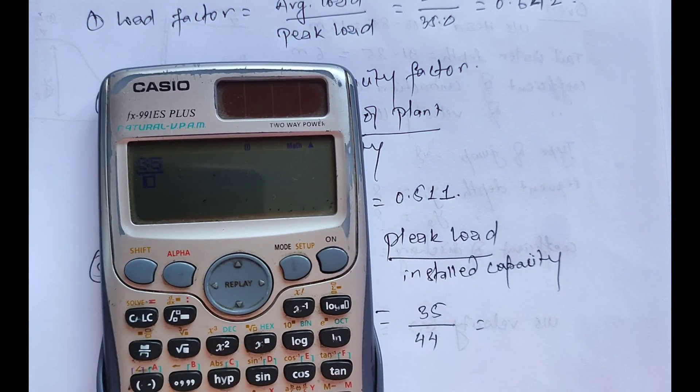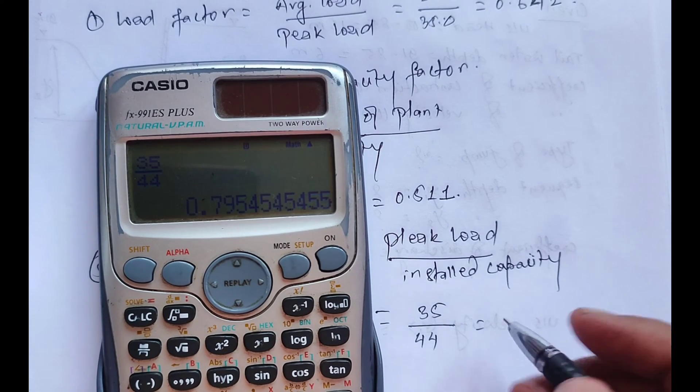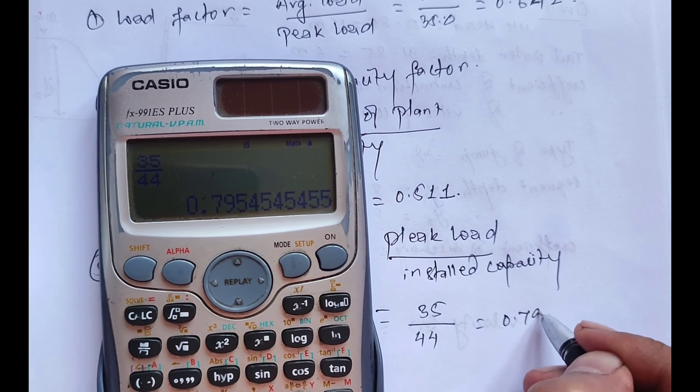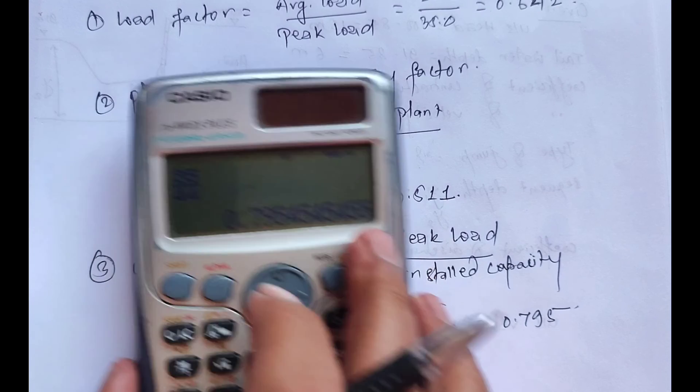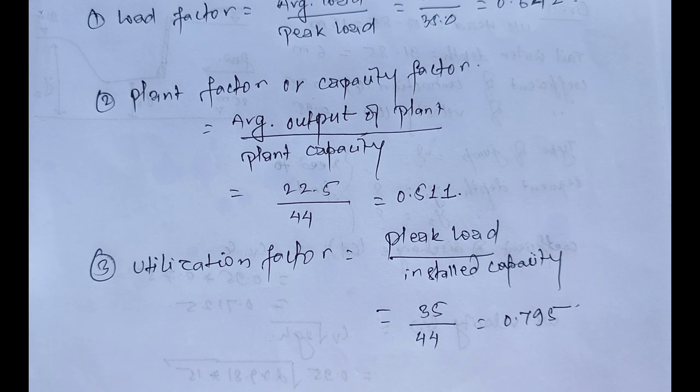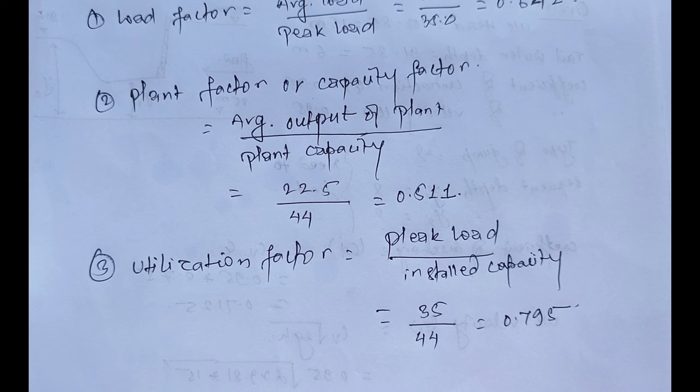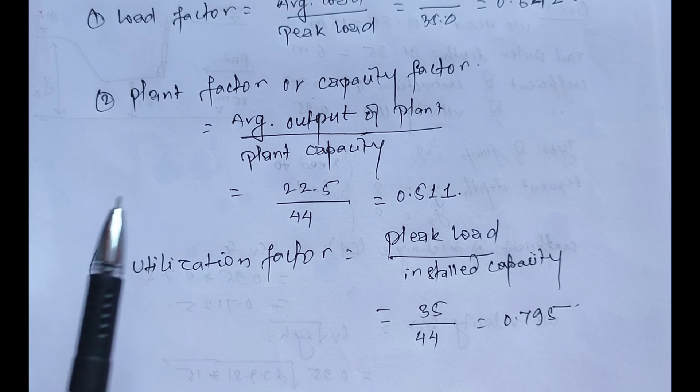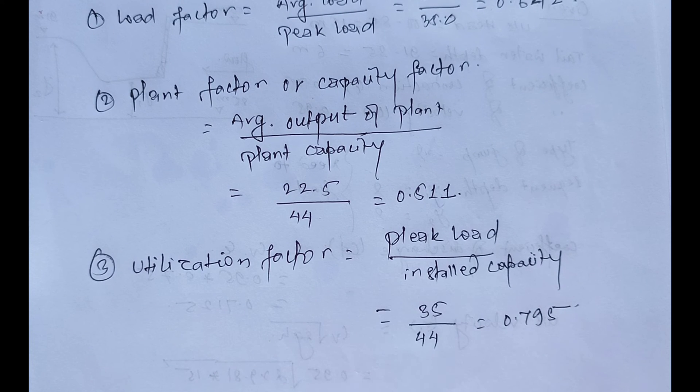35 divided by 44, which means 0.795. So from the given question, we have to calculate only three points: load factor, plant factor, and utilization factor. After that we complete the question. So today we'll end up the class for this month and we'll come again with a new video. Till then, keep on watching our videos and don't forget to subscribe. Thank you.